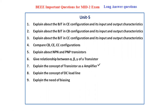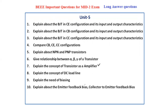Next, explain the need of biasing. The following are biasing circuit questions asked separately: explain about emitter feedback bias, explain about collector to emitter feedback bias, explain about fixed bias, and explain about voltage divider bias (self bias). These four biasing questions are asked separately, not combined. This covers the unit 5 long answer questions of the BEEE subject.